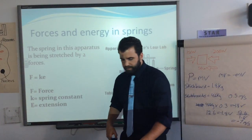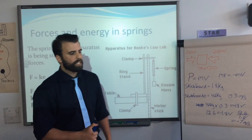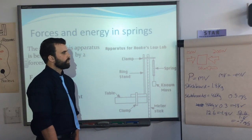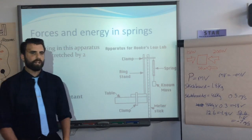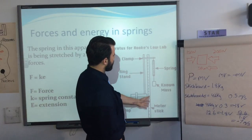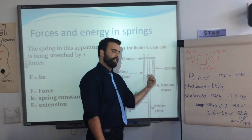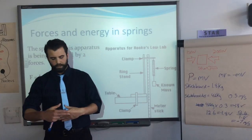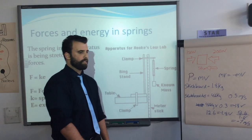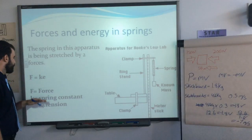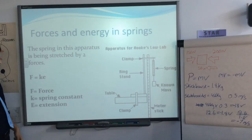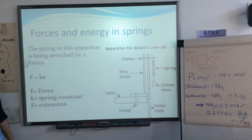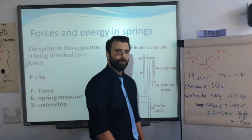Next is forces and energy in springs — Hooke's Law. You set up a clamp with a spring, hang a known mass, and measure the extension as you add mass each time. The equation is F = ke, where F is force, k is spring constant, and e is extension.